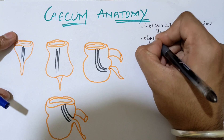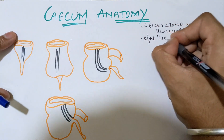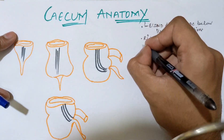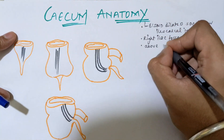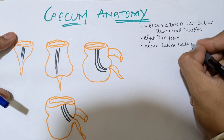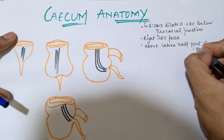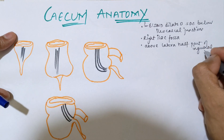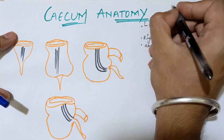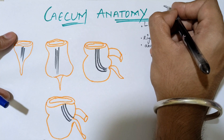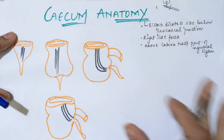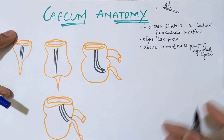The cecum is present in the right iliac fossa, where the ilium bone is present. There is a fossa for the iliacus muscle, and the cecum lies within that fossa. It is also present just above the lateral half of the inguinal ligament — so consider your inguinal ligament, and above the lateral side of it, the cecum will be present.